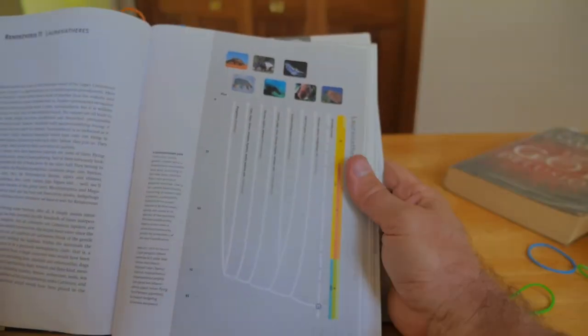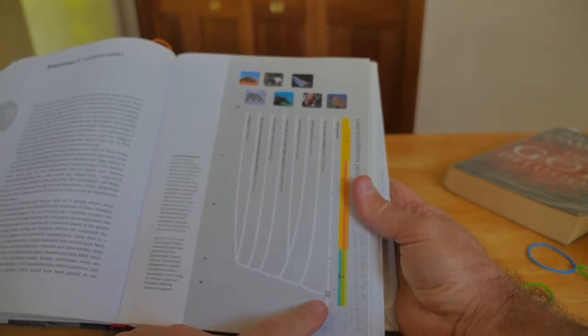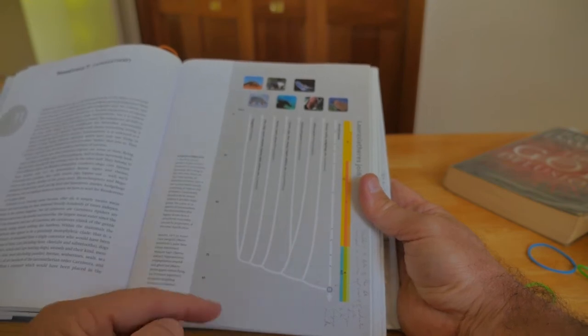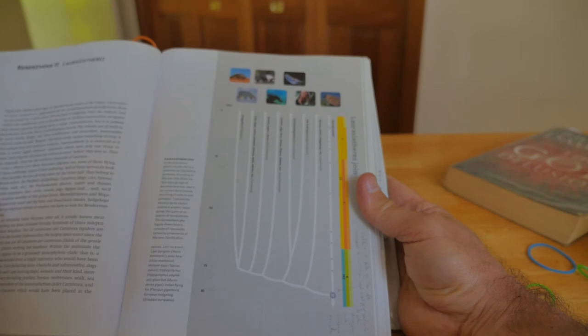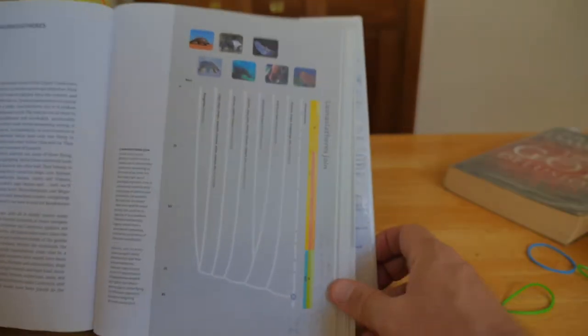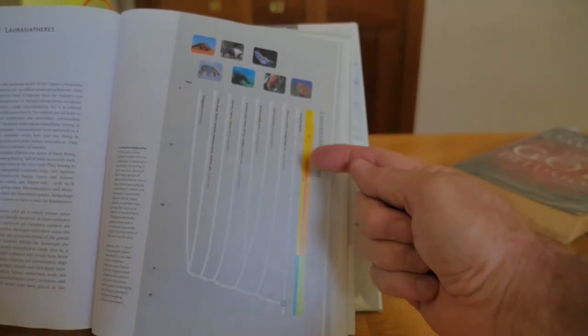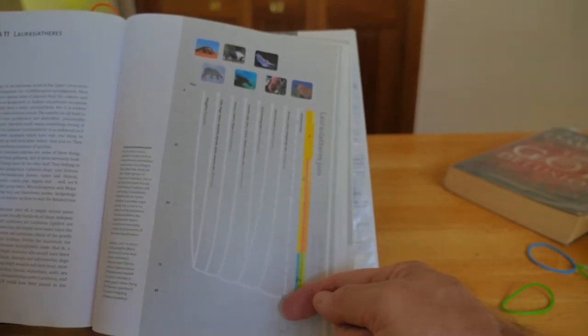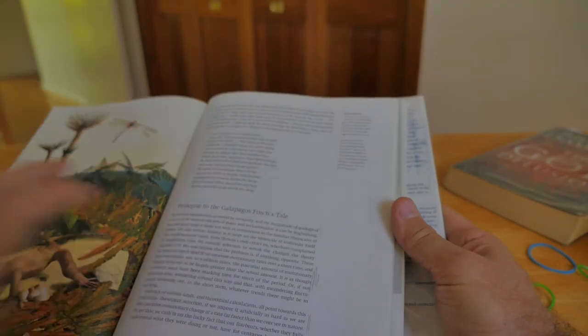And now here are the laurasiatheres. That's interesting because this is rendezvous number 11. They have it at about 85 million years. I think the modern one is about 95 million years. In any case, they're cats and dogs and bears and all the fruit bats and things like that. The whole point is there are more and more rendezvous. And each one of these dots here, there's dot number one—chimps and gorillas and orangutans and gibbons and then old world monkeys and new world monkeys, all the way down to 11, which are the laurasiatheres, things that evolved into Laurasia.